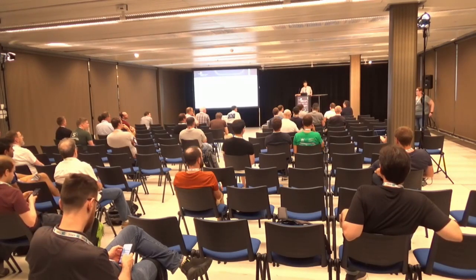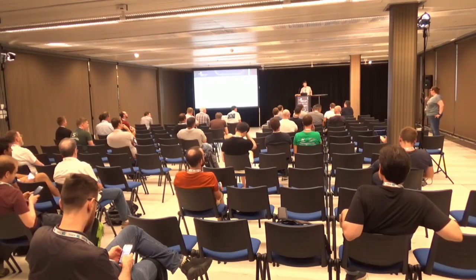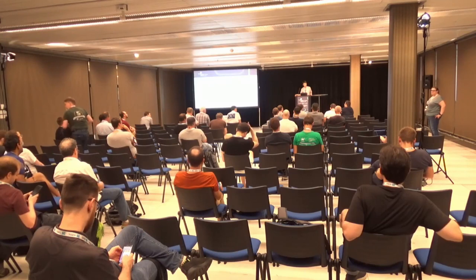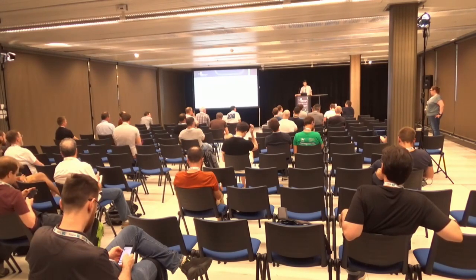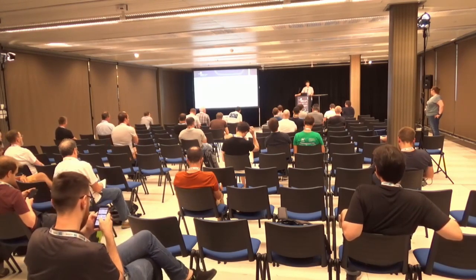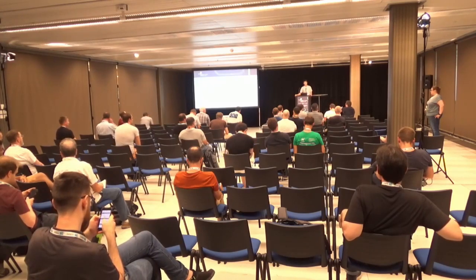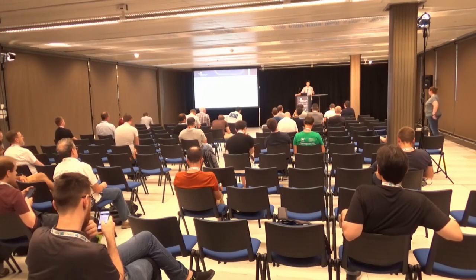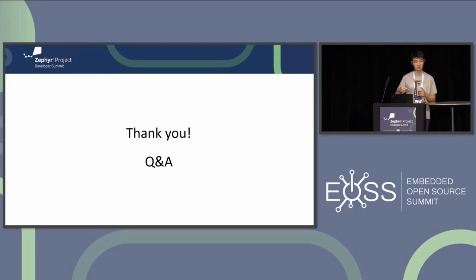Question: Using the API, can you change the translation table for the SMMU according to the thread that is running — for example, allow certain memory regions for one thread, then on the next context switch change the translation table to allow access to a different memory region? Answer: We just tried to bring up a topic on whether we can introduce such things, and we don't have concrete requirements yet. This really needs more discussion.